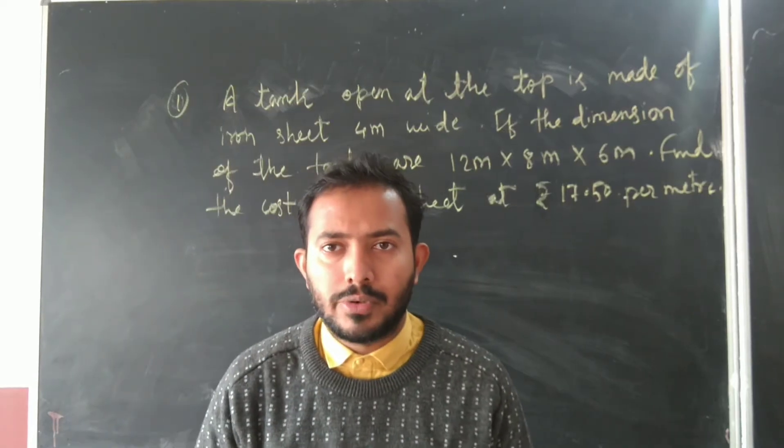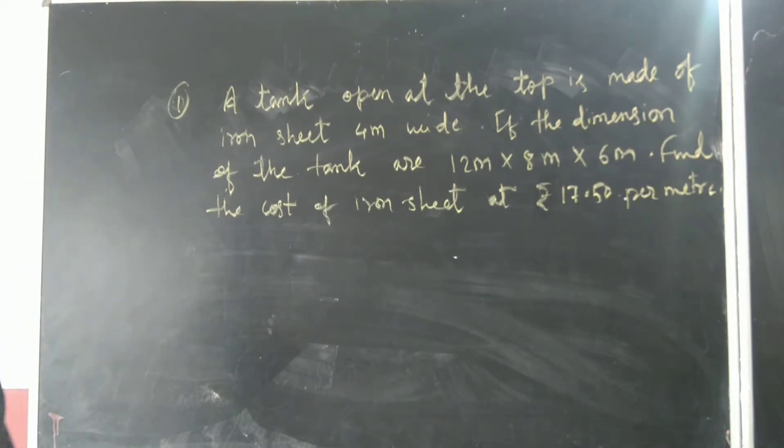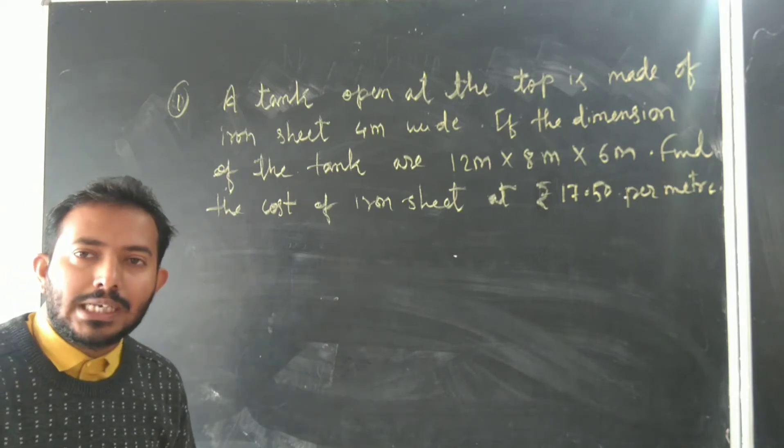One problem related to surface area and volume. A tank open at the top is made up of iron sheet 4 meter wide. If the dimensions of the tank are 12 by 8 by 6 meter, find cost of the iron sheet at rate 17.50 per meter.